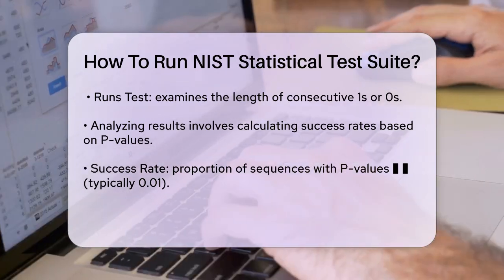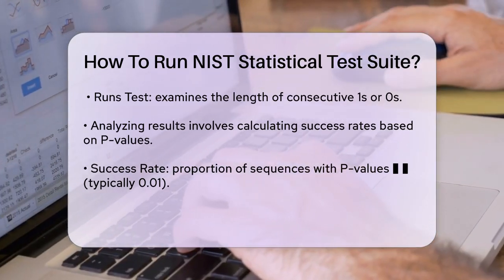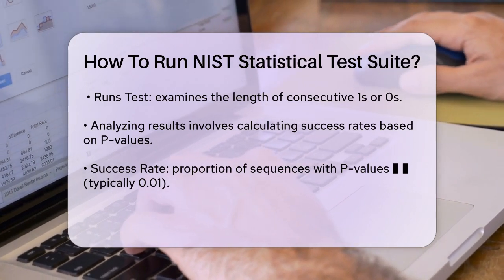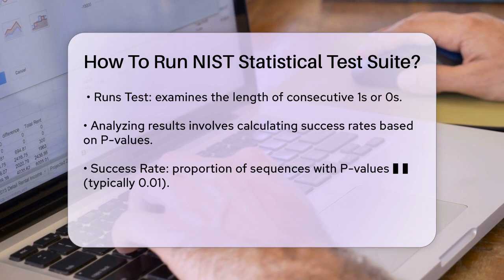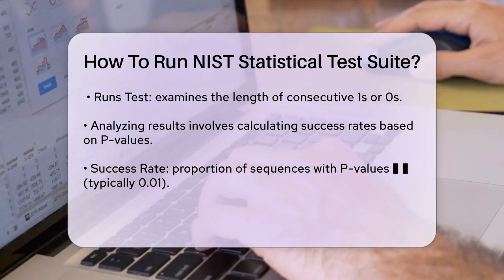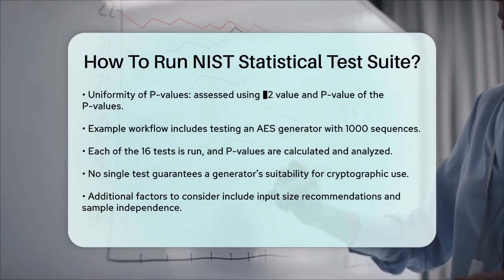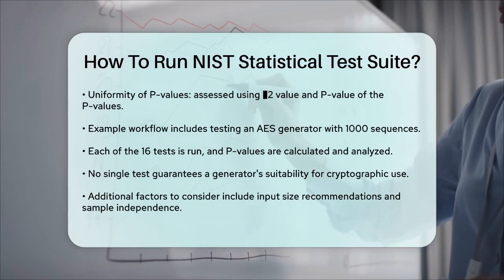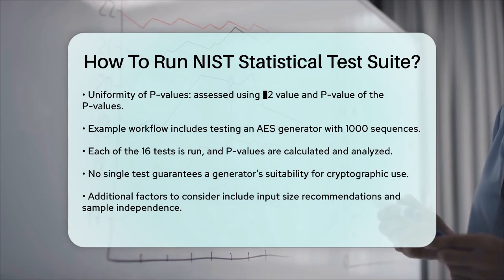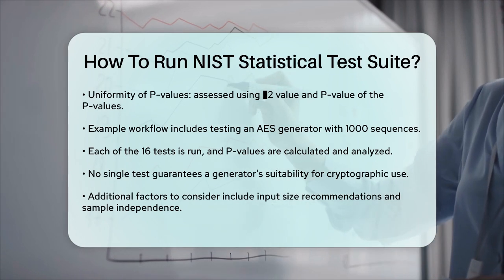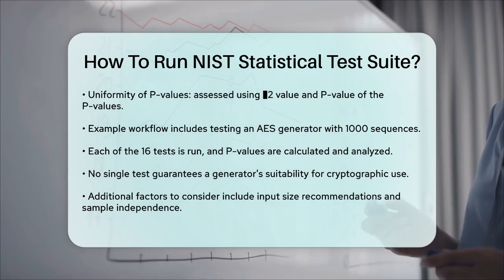As an example workflow, suppose you're testing an AES generator. You would generate 1,000 sequences, each 10^6 bits long, then run each of the 16 tests on these sequences. For each test, you calculate the p-values and check the success rate and uniformity. For instance, if you're running the Discrete Fourier Transform test, you'd check for any periodic patterns in the sequence. If the p-values indicate that the sequence passes this test, it suggests that the sequence does not have any obvious periodic patterns.